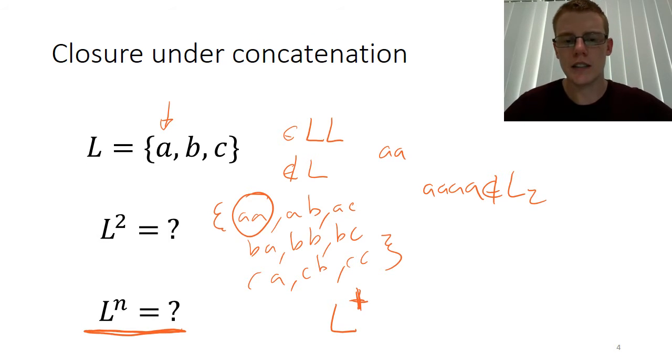Now in this case, what happens if we concatenate two elements in L Kleene plus? Well, we end up with something that can be made by concatenating elements of L any arbitrary number of times. But by definition, that must have been in L Kleene plus, because that's what we said L Kleene plus was. So now we can see that L Kleene plus is closed under concatenation.